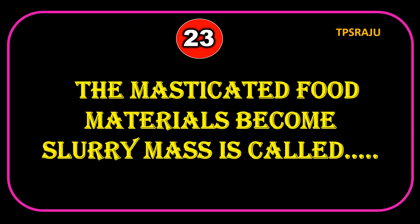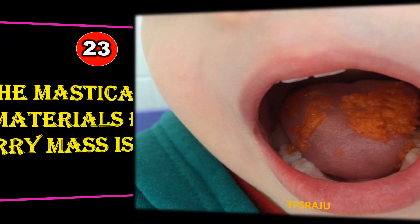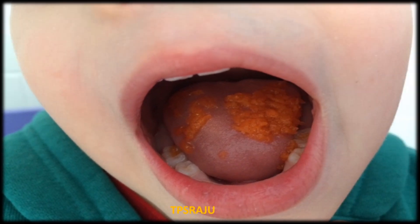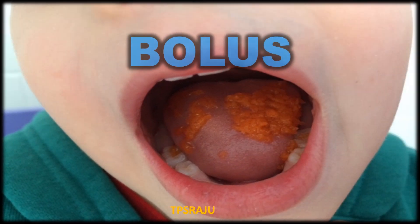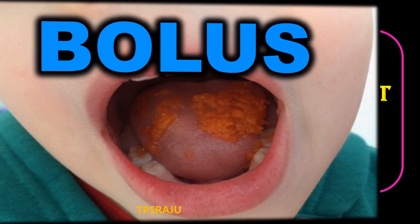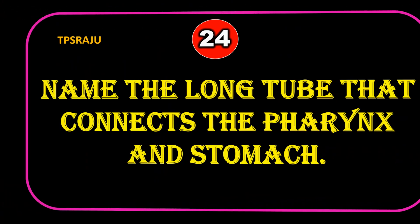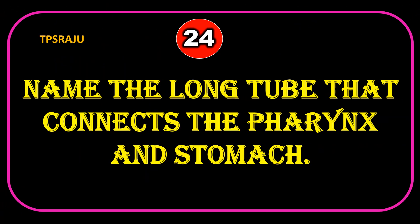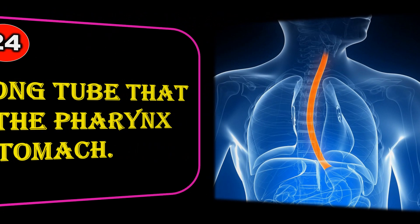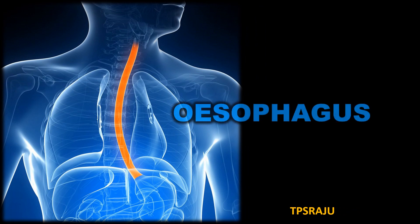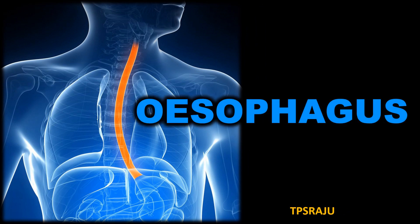The masticated food materials become a slurry mass called bolus. The long tube that connects the pharynx and the stomach is called the esophagus.